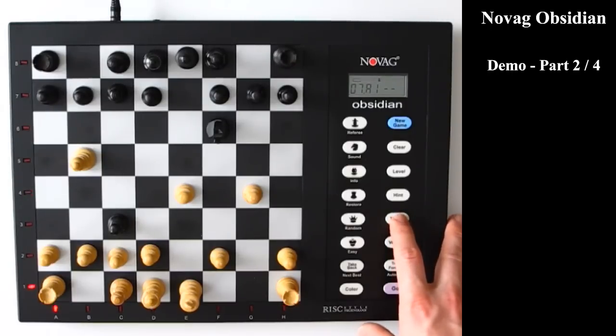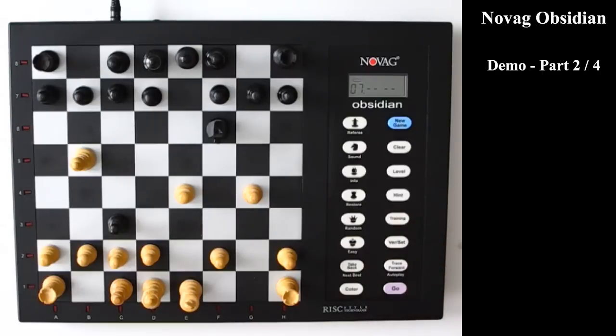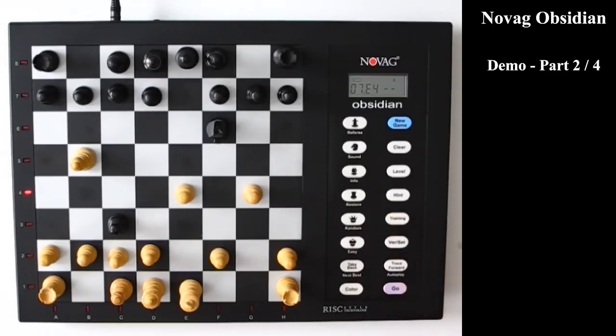And then it will highlight all the different pieces that you can make a legal move with. So that's really a good feature for the novice player who isn't sure what he or she is allowed to do. Again, you can completely ignore what the computer says in the training mode and make your own move.